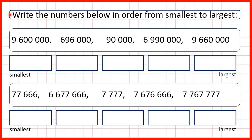We need to write the numbers below in order from smallest to largest. So first we have 9,600,000; 696,000; 90,000; 6,990,000; and 9,660,000. When we are comparing numbers, we start by comparing the larger place values first — so here, our millions place value.